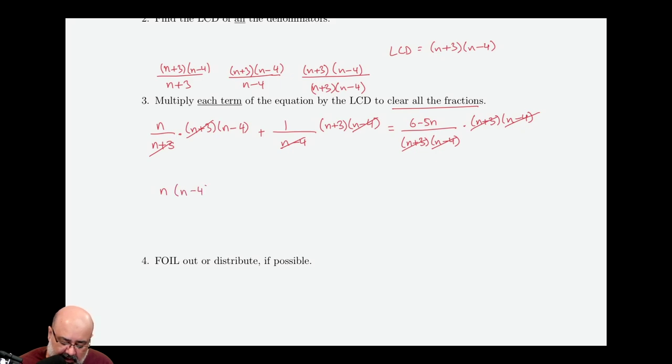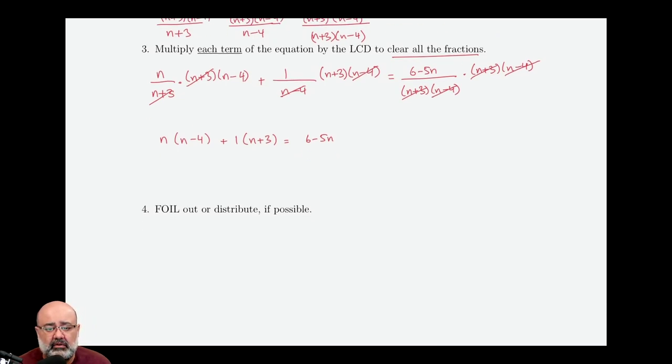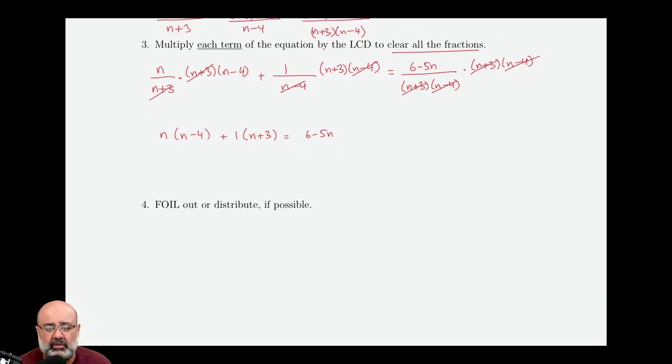Now we just write down what we have left: n times n minus 4 plus 1 times n plus 3 equals 6 minus 5n. That's it, since both those factors cancelled out. And now the next step is to FOIL out or distribute, if possible. There's nothing to FOIL out, but we can distribute the n and the 1. So n times n would give us n squared minus 4n plus n plus 3 equals 6 minus 5n.